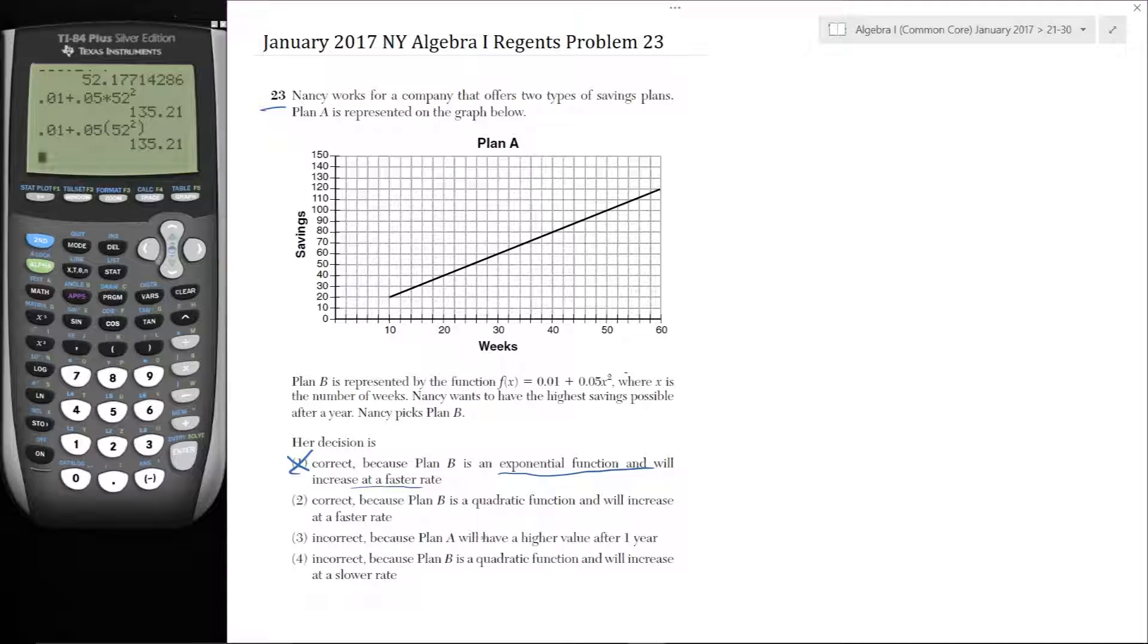Let's see what this says. Correct because plan B is a quadratic function, it will increase at a faster rate. Incorrect because plan A will have a higher value after one year. Or incorrect because plan B is a quadratic function and will increase at a slower rate. I'll tell you now what the problem that I had with the wording is. Quadratic functions have a greater rate of increase eventually. Their initial rate of increase is lower and their final rate of increase is higher.